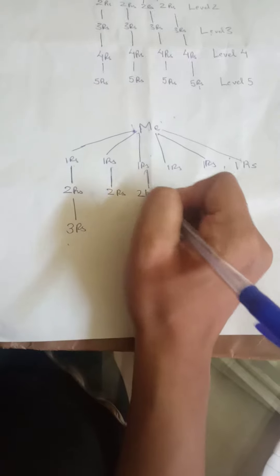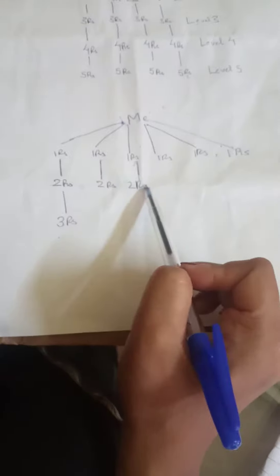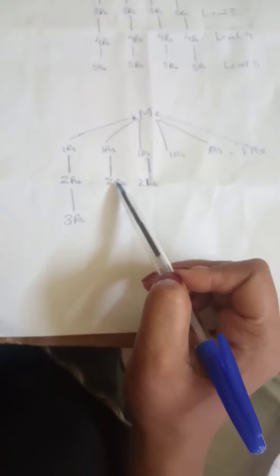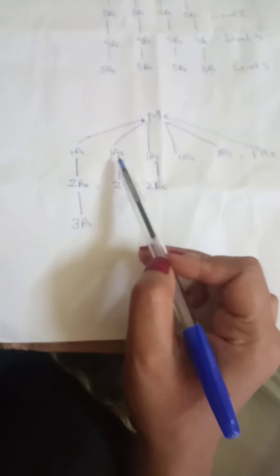So even in this way, even my downlines, they also benefit because I have registered this person under their name. So this person, this downline of mine will also benefit.